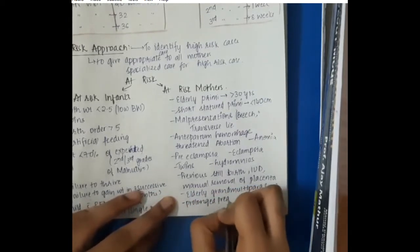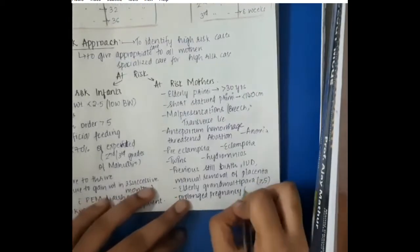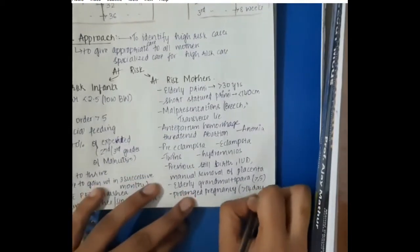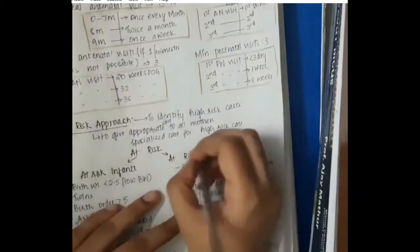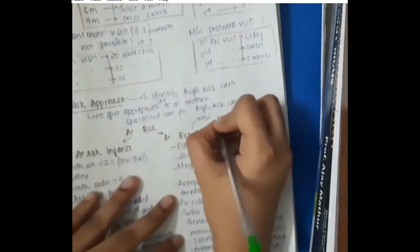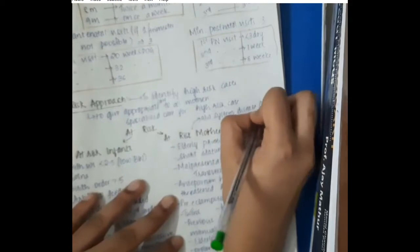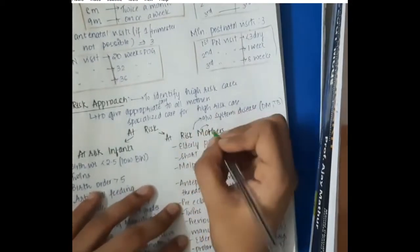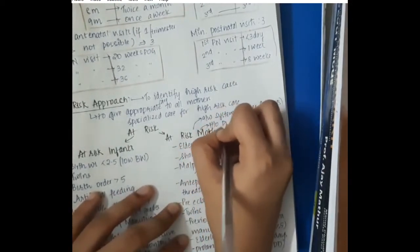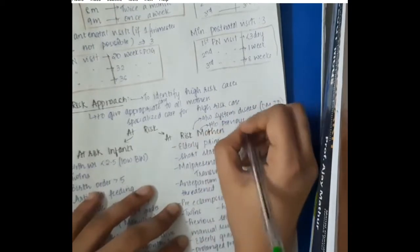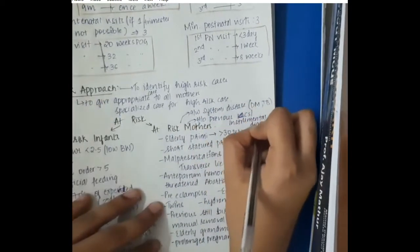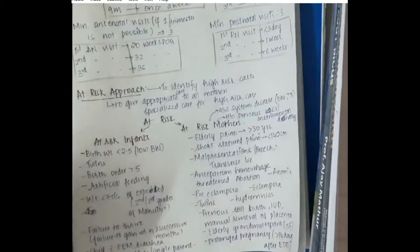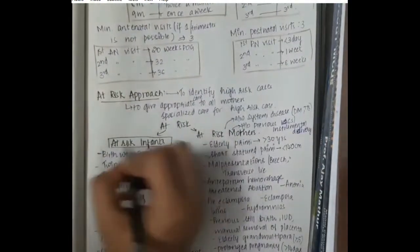Prolonged pregnancy that is more than 14 days after expected date of delivery. And also if the mother has some associated systemic disease like diabetes mellitus or tuberculosis. If there is history of previous caesarean section or instrumental delivery. All these come under at-risk approach. At-risk infants and at-risk mothers.